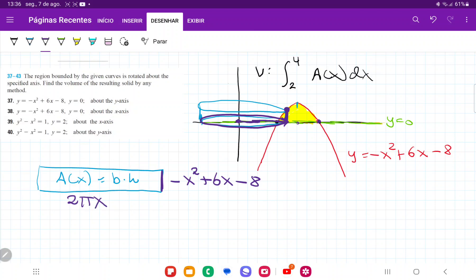And so we can say here that this base is going to be 2 pi x. Well, now we have an expression for the base and for the height. So our area is going to be base times height, which is going to be 2 pi x, which is our base, times minus x squared plus 6x minus 8, which is our height.